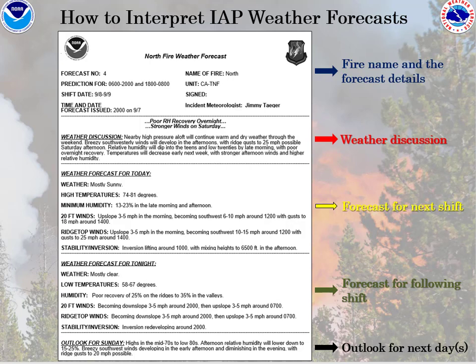Here's an example of a forecast from the North Fire in Central California in 2018. At the top you can see the fire name and the forecast details. Then you have the weather discussion, followed by the forecast for the next shift, the forecast for the following shift, and then at the end an outlook for the next couple days.